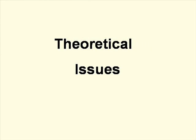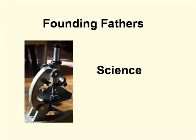Firstly, theoretical considerations. The founding fathers of sociology were clear that the subject was a science — the science of society, the highest and most difficult science of them all. However, as the 20th century progressed, sociologists divided themselves into two main groups.